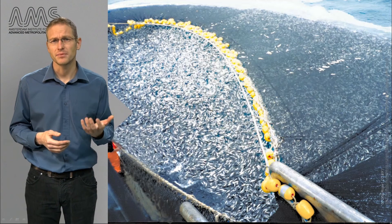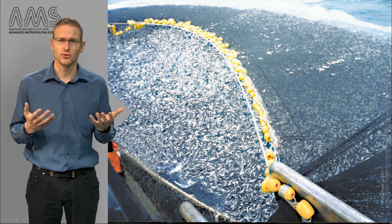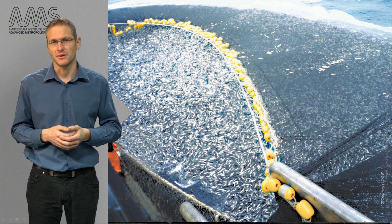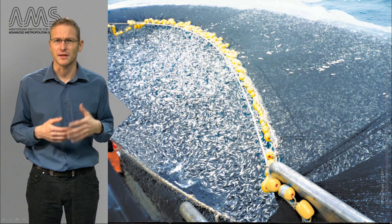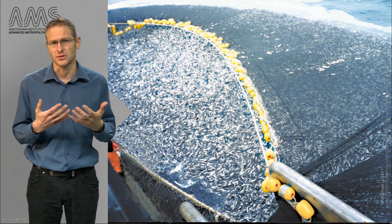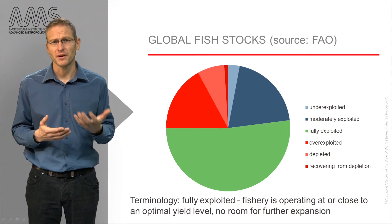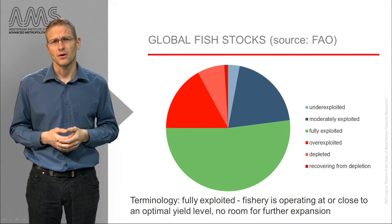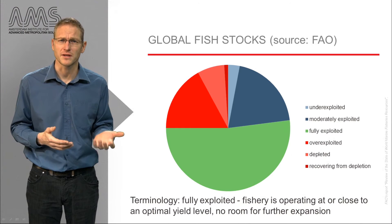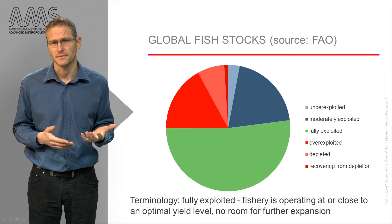Another example is fish. Fish is a renewable resource because if managed well it can be reproduced at the same rate or faster than it is used up. As you can see, 25 percent of the global fish reserves are over-exploited, depleted, or recovering from depletion.